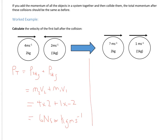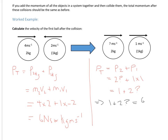That's the total momentum before — six Newton seconds. By conservation of momentum, the total momentum after is exactly the same. So it's going to be two times V plus one times one — they're both going in the same direction now — which gives us one plus two times V equals six. Solving: six minus one gives you five, divided by two gives you 2.5 meters per second. We've managed to predict what will happen to these objects following the collision.